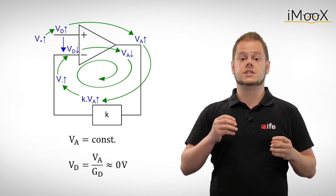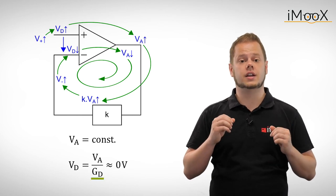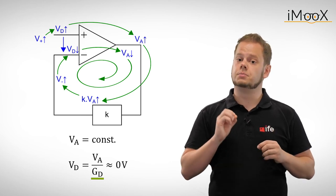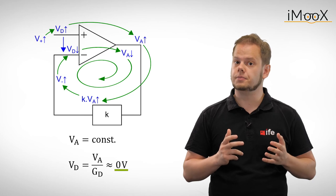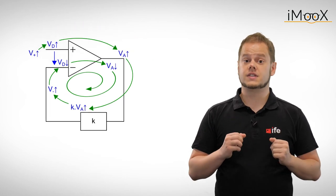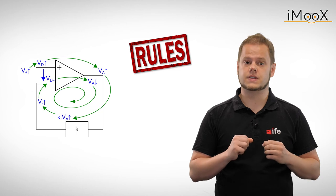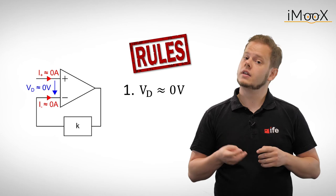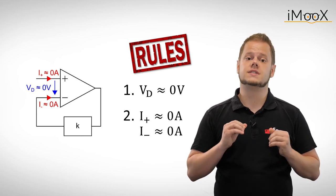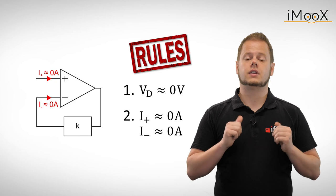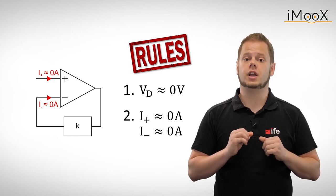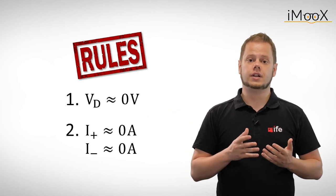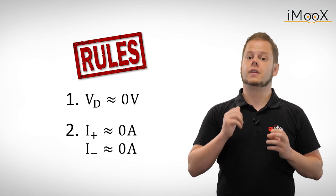Since the output voltage is limited by the supply voltage and the differential gain is very high according to the previously mentioned rule 1, the differential input voltage almost equals 0 volts. This results in our new rule set for negative feedback circuits. The differential input voltage VD is 0 volts. The second rule stems directly from the previous second rule. The currents flowing through the inverting and non-inverting inputs are 0 amps. These two rules are all we need to solve operational amplifier circuits with negative feedback.